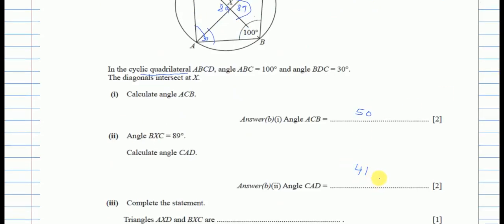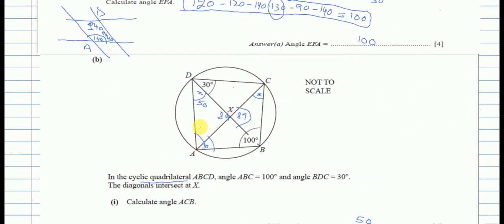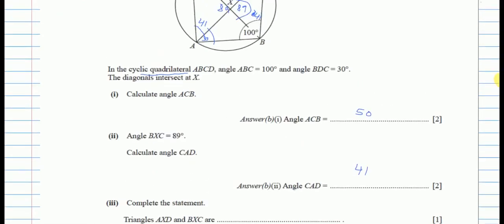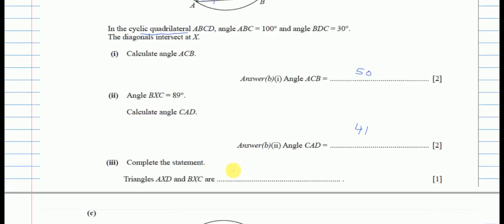Complete the statement: triangles AXD and BXC are similar. Angle AXD is 41 degrees, and the corresponding angle in triangle BXC is also 41 degrees. Both triangles share the same three angles — 89, 50, and 41 degrees — so they are similar triangles.